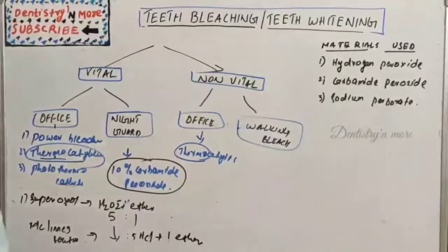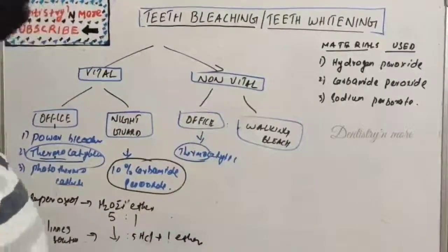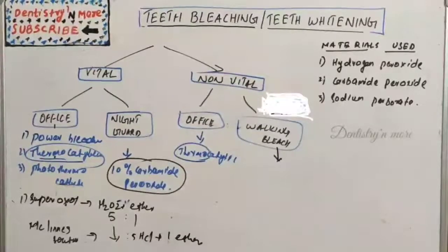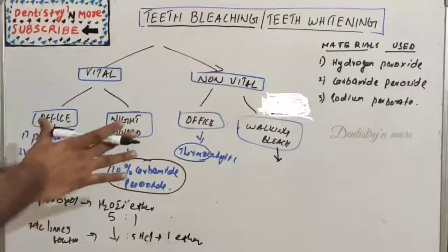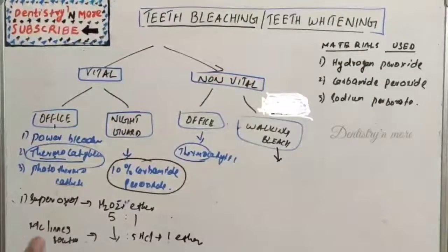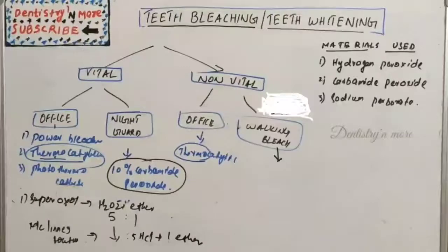Next is bleaching of the non-vital tooth. The first technique is walking bleach, which involves the use of chemical agents within the coronal portion of an endodontically treated tooth to remove discoloration. It is indicated for discoloration of the pulp chamber, dentine discoloration, and discoloration not amenable to extra-coronal bleaching. It is contraindicated in superficial enamel discoloration, defective enamel formation, severe dentine loss, and presence of caries or discolored composites.